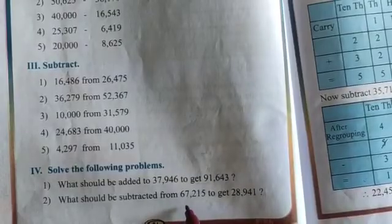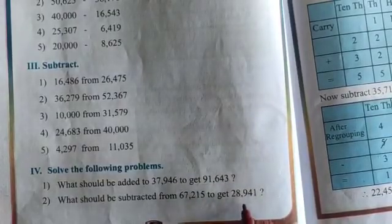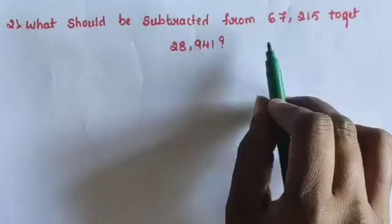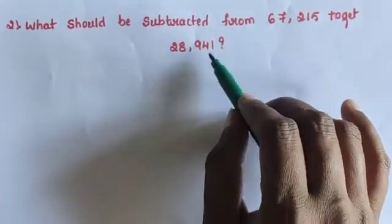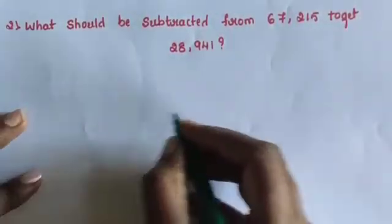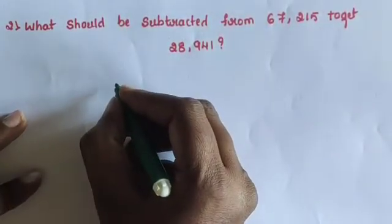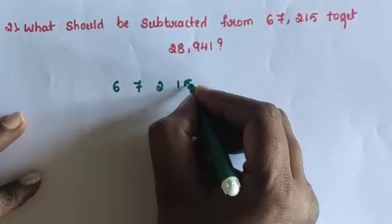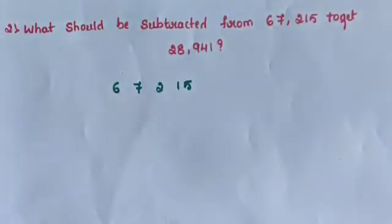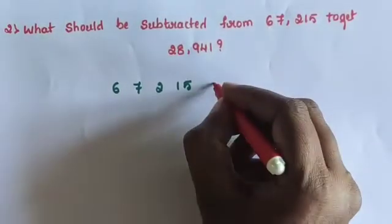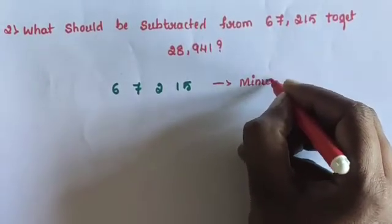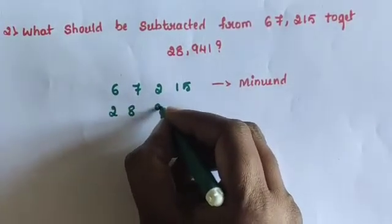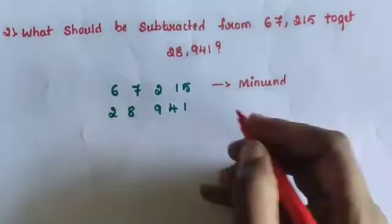Next, question number 2: what should be subtracted from 67,215 to get 28,941? The numbers are arranged: 67,215 is the minuend and 28,941 is the subtrahend.